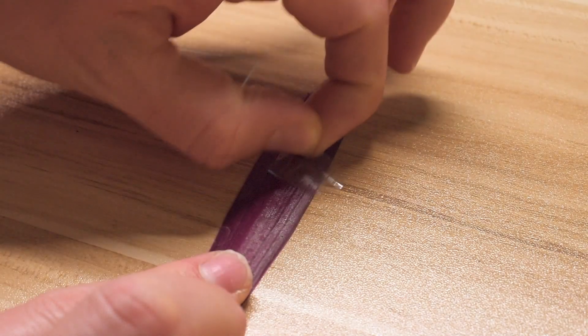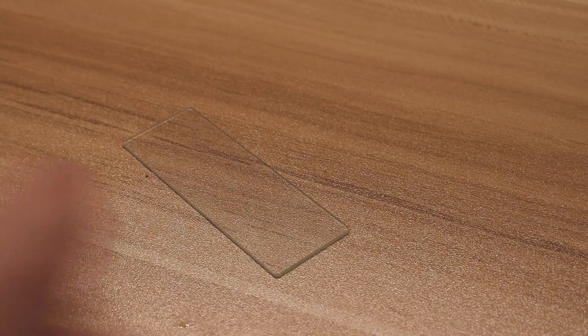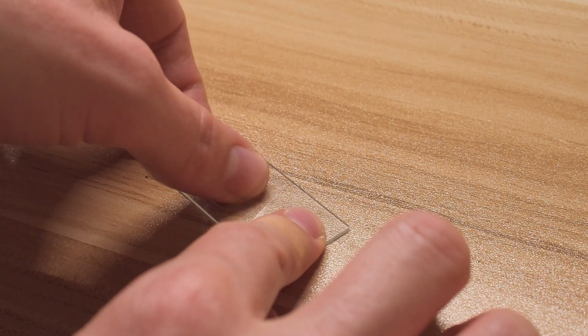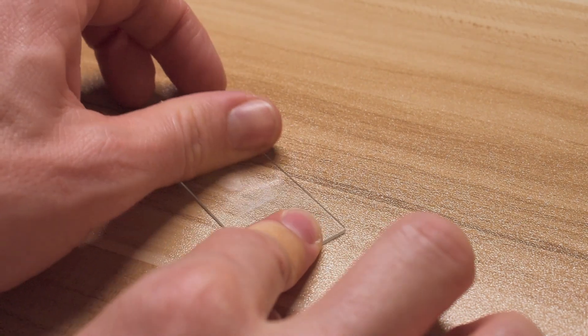Peel off the tape and the nail varnish will peel off with it. Put it on a microscope slide, and then look under the microscope.